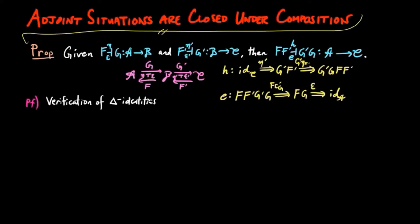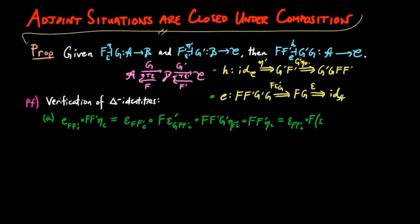The proof is a straightforward verification of the triangle identities. The triangle identity epsilon F F prime C composed with F F prime eta C can be reduced to epsilon F F prime C composed with F epsilon prime G F F prime C composed with F prime G prime eta F prime C composed with F prime eta C.